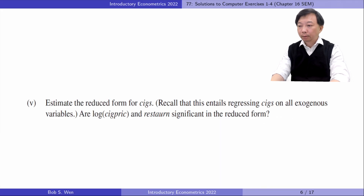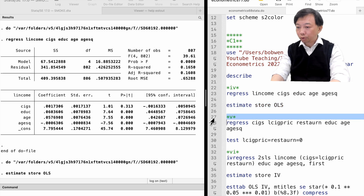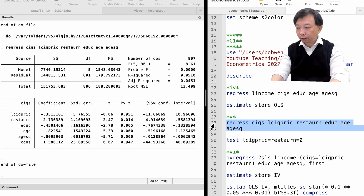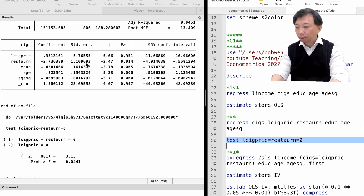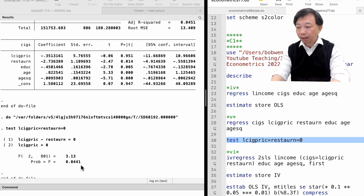In Part 5, estimate the reduced form for cigarettes. Recall that this entails regressing cigarettes on all exogenous variables. Are log cigarette price and restaurant significant in the reduced form? The reduced form equation for cigarettes shows that restaurant is individually significant at the 5% level, but cigarette price is not. The F-test shows that they are jointly significant at the 5% level.